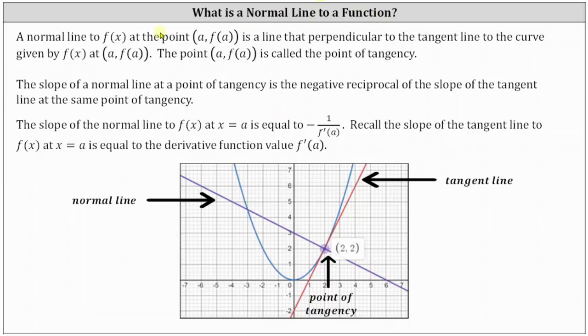What is a normal line to a function? A normal line to f of x at the point (a, f(a)) is a line that is perpendicular to the tangent line to the curve given by f(x) at the point (a, f(a)). The point (a, f(a)) is called the point of tangency.